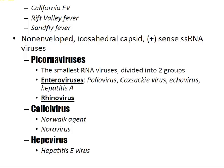Non-enveloped icosahedral capsid positive-sense single-stranded RNA viruses include the picornaviruses — the smallest RNA viruses — divided into enteroviruses (poliovirus, Coxsackievirus, echovirus, hepatitis A) and rhinoviruses. Caliciviruses include Norwalk agent and norovirus. The hepevirus is hepatitis E virus.